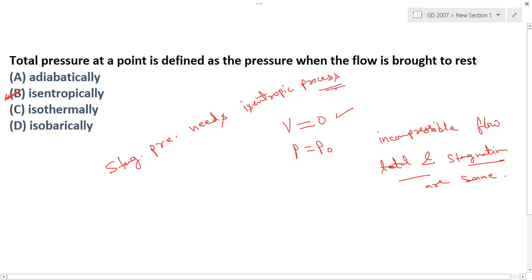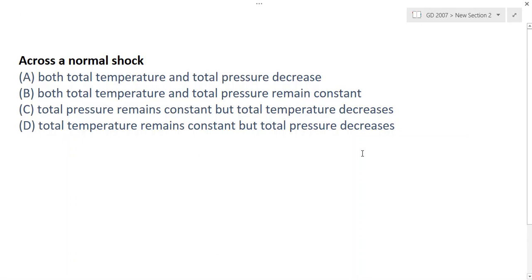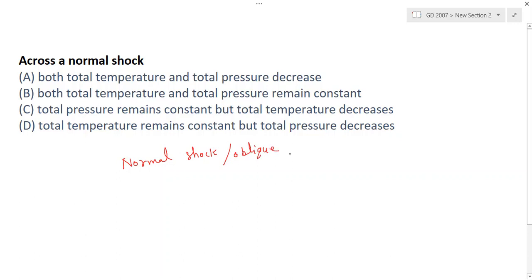Now the second question: across a normal shock, does total temperature and total pressure decrease? I will discuss normal shock and oblique shock. There are two types of oblique shock — strong and weak. I am talking about a strong oblique shock here.